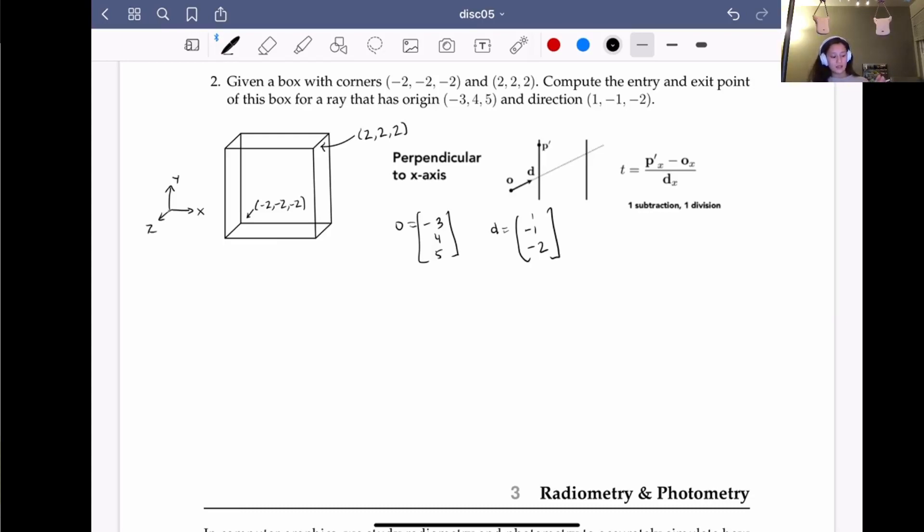Let's start with yz. First, we will take t equals py. So py, we have two corners here, so we're going to do this computation twice. Let's start with our positive corner. So py will be 2 minus oy, that will be 4 divided by dy, which is negative 1. So that will be 2. And then we will also take our negative corner and repeat the same process. So we'll have negative 2 instead of positive 2, and then the values for o and d will be the same. And that will be 6.